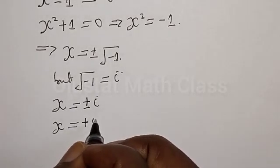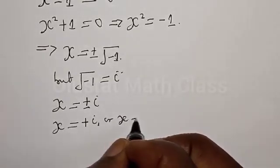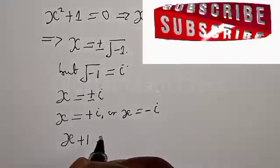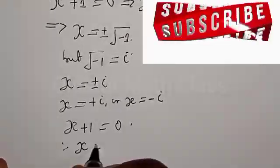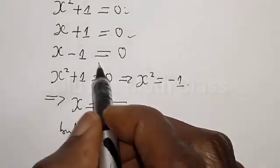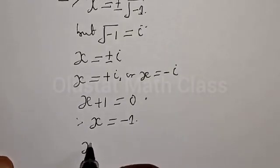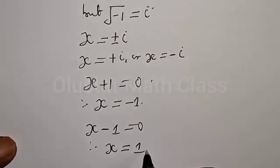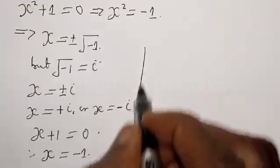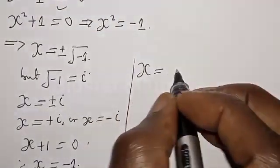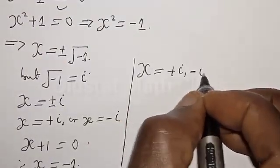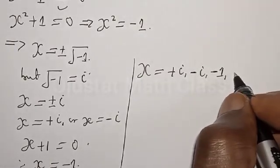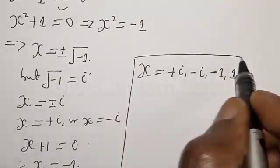Since the square root of minus 1 is equal to i, therefore s is equal to plus or minus i, meaning s equals plus i or s equals minus i. From s plus 1 equal to 0, we get s equal to minus 1. And from s minus 1 equal to 0, we get s equal to 1. Therefore the roots of the equation are s equal to plus i, minus i, minus 1, and plus 1.